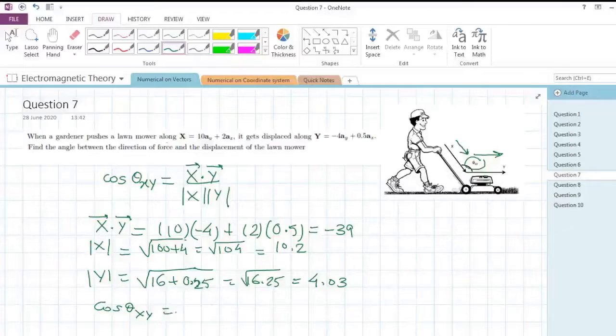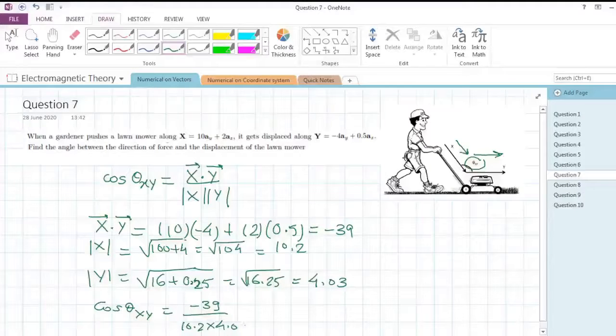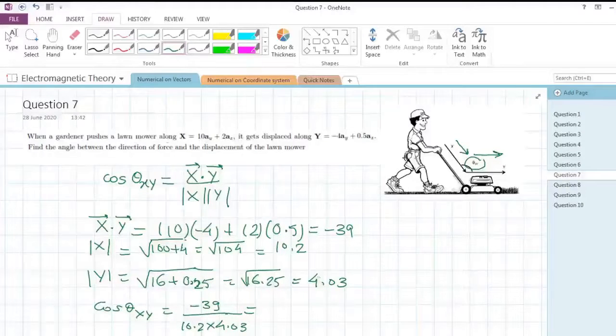It equals -39 divided by 10.2 times 4.03. We will keep this minus sign from -39 because we know that the angle we are going to evaluate is not an acute angle. In previous videos we have ignored this minus sign and taken just the magnitude, but in every case we cannot do that.